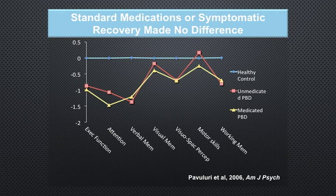Why is this an urgent problem? Even with medications or symptomatic recovery, nothing has made a difference. These are healthy controls at baseline — the blue line — and you can see the domains in neurocognitive function tested: executive function, attention, verbal memory, visual memory, visuospatial skills, motor, and working memory. The ones most affected in unmedicated patients are shown by the pink line; medicated ones are the yellow line. Despite medication status, it made absolutely no difference. Executive function, attention, verbal memory, and working memory are the worst affected.